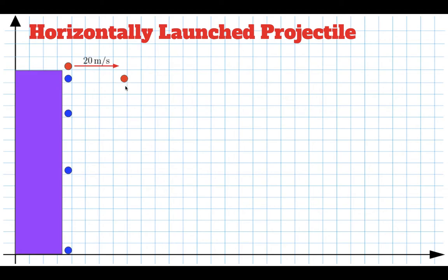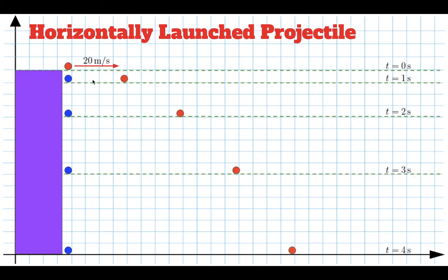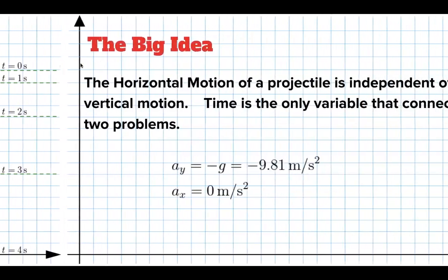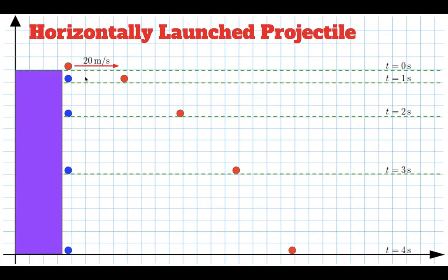Another second after that, it will fall 15 extra meters — 20 meters down total — so it'll be the same height as the dropped ball, but also 20 meters over. A second after that, it moves another 20 meters to the right and falls farther than it did the previous second. Finally, after four seconds, it hits the ground. Both balls fall the exact same amount each second. The fact that the red ball is moving to the right does not affect the rate that it falls — it's just moving sideways while it's falling.